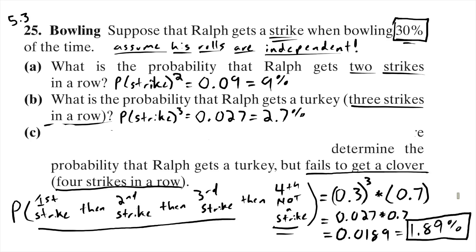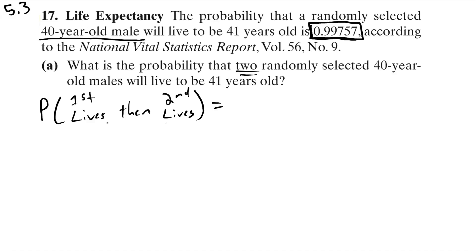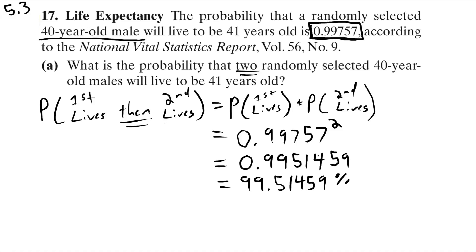Let's look at one more sample problem that introduces an interesting way to use the complement rule. From section 5.3: the probability that a 40-year-old male will live to be 41 is 0.99757. What's the probability that two randomly selected 40-year-old males will both live to be 41? Assuming they're independent, we use the multiplication rule: the probability of the first living then the second living is this number squared, which stays very high.